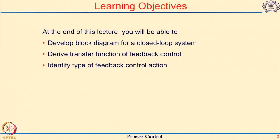For this first lecture, the objectives would be: first, to develop block diagram representations for our systems, especially when we have a control system placed on top of a physical system. Then we will derive closed-loop transfer functions, and lastly we will look at the different types of feedback controllers which we have.